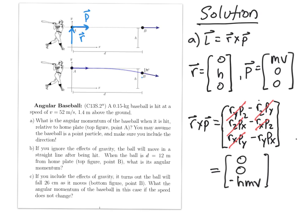And the answer is simply [0, 0, -hmv]. 0 in the x and y directions, and negative h, m, v in the z direction. Therefore, the direction of the angular momentum is into the page, which you could check by using the right-hand rule as well.